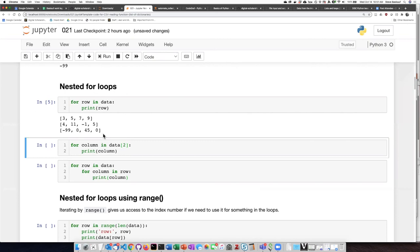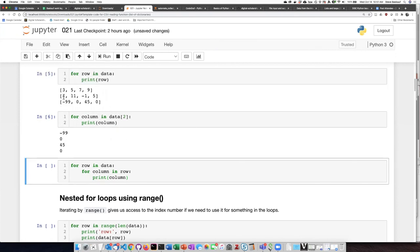If I just pick out one of the data row items, item number two, which would be this last one, and step through each of the items in here one at a time, calling them the columns. Then I get this 99, 0, 45, and 0.